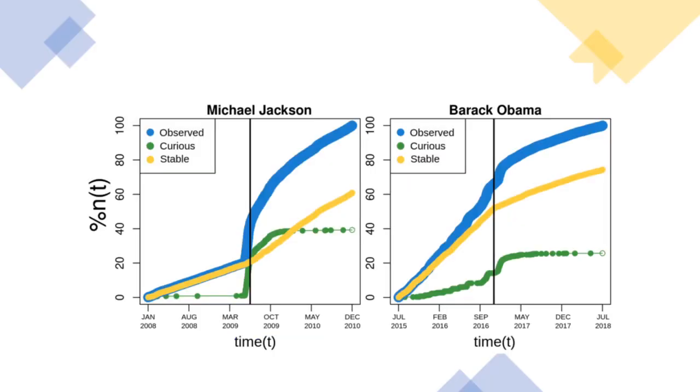For instance, consider the two examples on the screen which record the number of YouTube search queries in the United States for Michael Jackson and Barack Obama respectively.